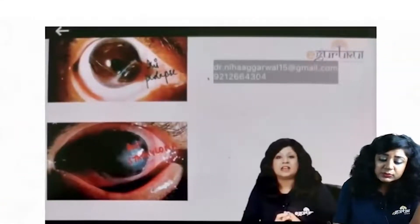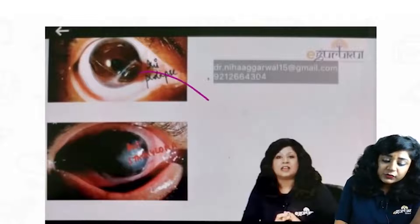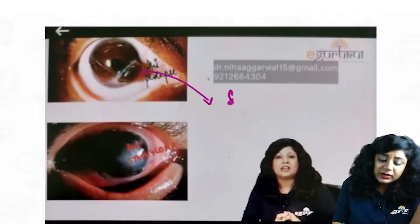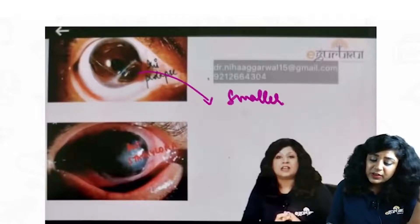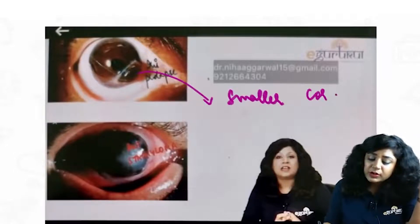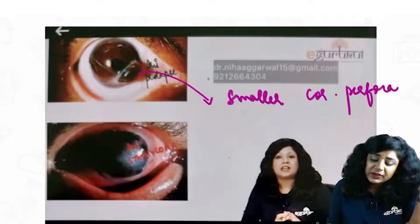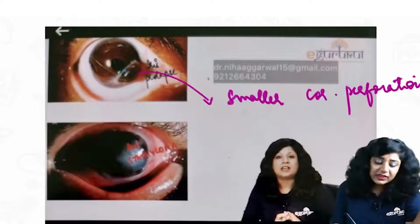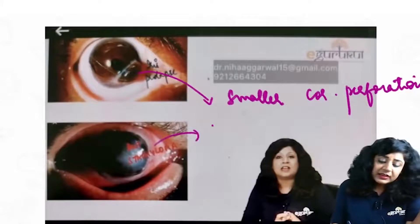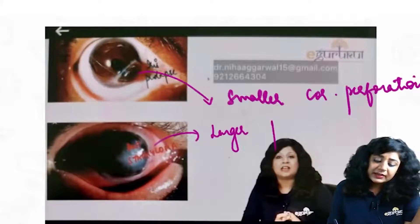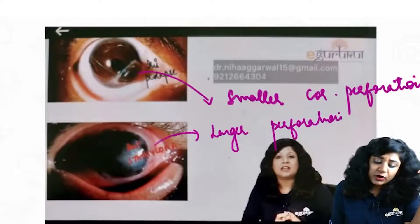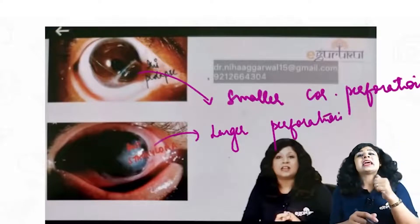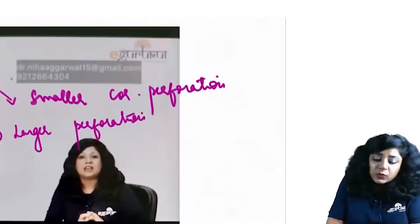When we have a smaller corneal perforation, we get iris prolapse and aberrant glaucoma. But when we have a larger perforation, in cases of larger perforation, we get what is called anterior staphyloma.